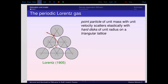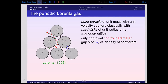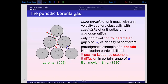On each vertex of the lattice you put a hard disk, which is fixed, and then you consider a point particle that collides elastically with all the scatterers. The only non-trivial control parameter is the gap size w, the minimal distance between two adjacent disks, which is trivially related to the density of scatterers. The periodic Lorentz gas is a paradigmatic example of a chaotic Hamiltonian particle billiard.